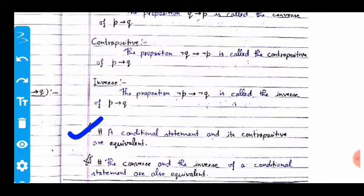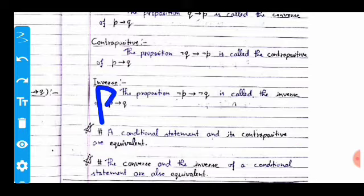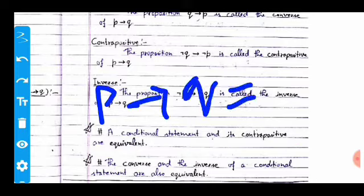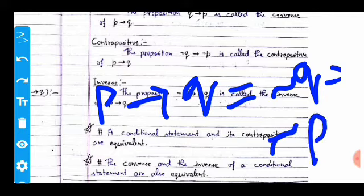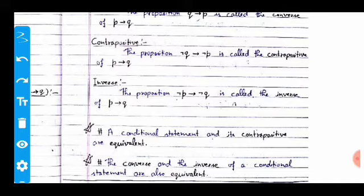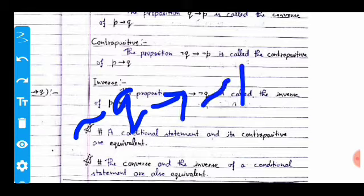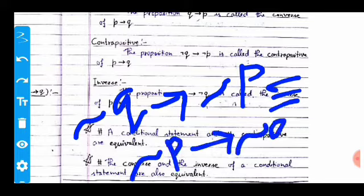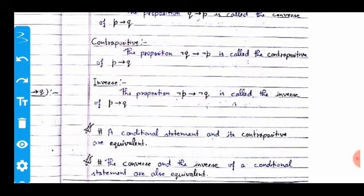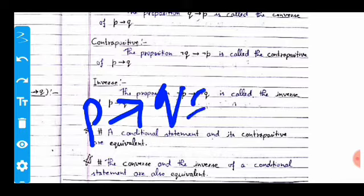An important point: the conditional statement and its contrapositive are logically equivalent — p implies q equals not-q implies not-p. Also, the converse and the inverse of a conditional statement are equivalent to each other. Additionally, p implies q is logically equivalent to not-p or q.